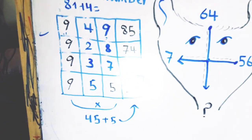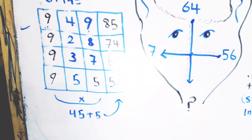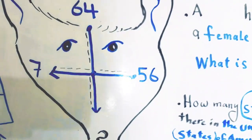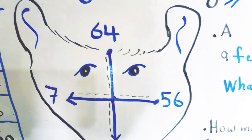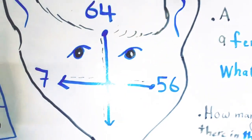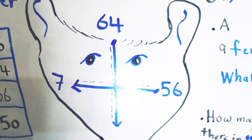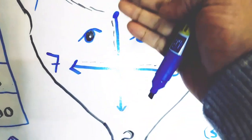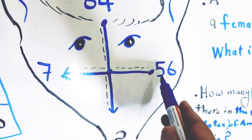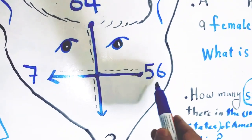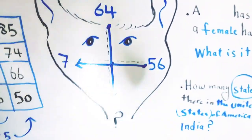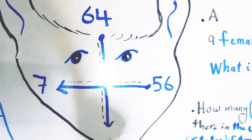We used the complete boxes to reach the missing digit. Now let's look at the second puzzle. In the second puzzle we have a shape with arrows. We have two intersecting arrows. The first arrow has 56 at the beginning and 7 at the end. The second arrow also has 56 at the beginning and 7 at the end.